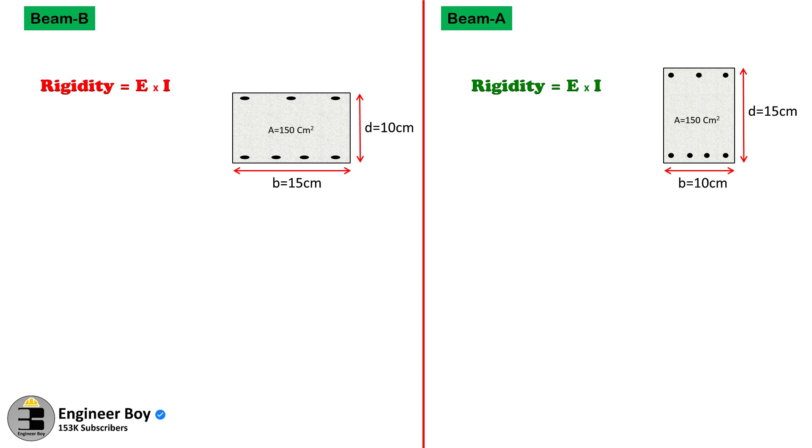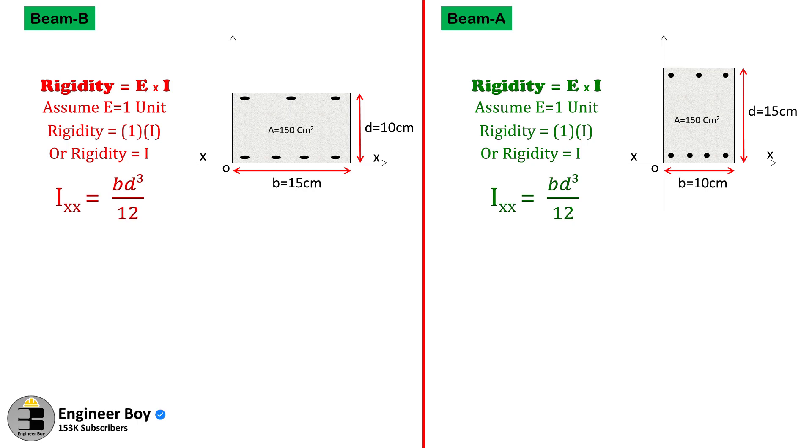And let's assume E for both is constant, or let's just take it as 1. So the rigidity of the sections is now just the moment of inertia of the sections. Let's consider moment of inertia about the x-axis, which must be bd³/12 for both.